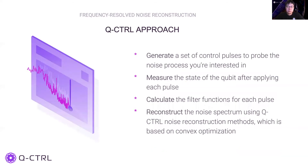The Q-Control approach to performing noise characterization consists of four steps. Compared to the standard method, it allows one to use arbitrary control sequences that are best suited to the reconstruction. We then calculate the corresponding filter functions and reconstruct the noise spectrum.